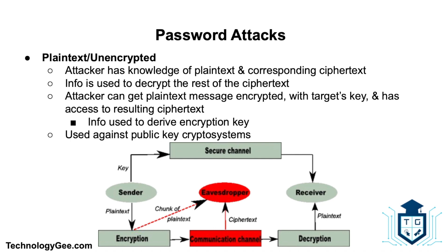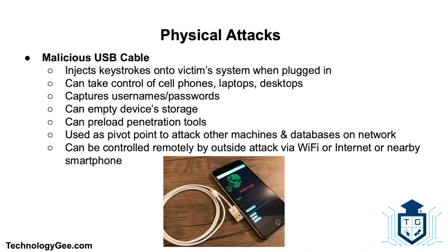Next we have plain text and unencrypted attacks. In a plain text unencrypted attack, the attacker has knowledge of the plain text and the corresponding cipher text, and uses this information to decrypt the rest of the cipher text. With a chosen plain text attack, the attacker can get a plain text message of their choice encrypted with the target's key and access the resulting cipher text to derive the encryption key — typically used against public key cryptosystems. An adaptive chosen plain text attack is similar, but allows the attacker to obtain several plain text messages of choice encrypted with the target's key.